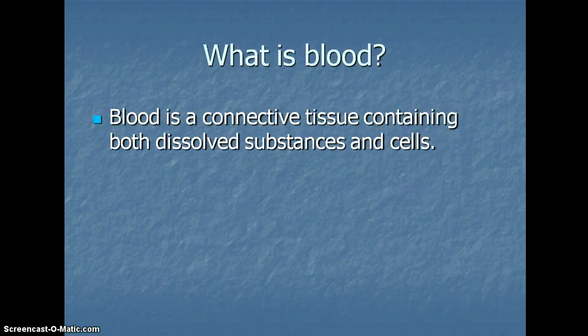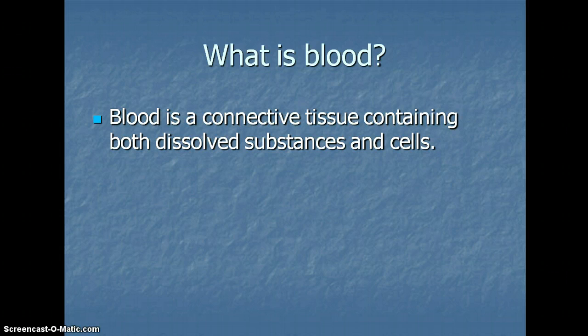What is blood? Blood is actually a connective tissue, which is a little bit surprising because we normally think of connective tissues as being things like ligaments or tendons. But blood is considered a connective tissue because as it moves throughout your body, it connects your digestive system with your brain or your heart with your lungs. As a connective tissue, it is made of both dissolved substances and cells.